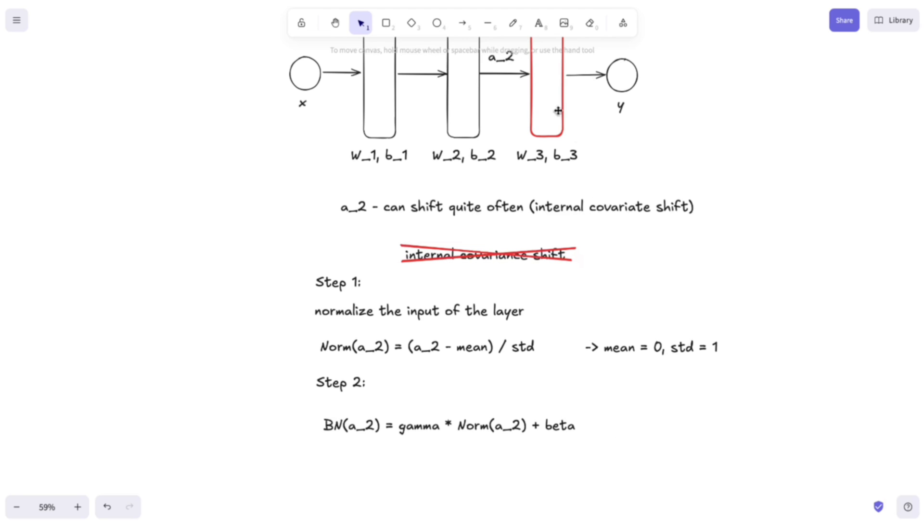And if we do that, then the input to this layer will have a mean equal to beta and a standard deviation equal to gamma. And here you have it, the two steps in the batch normalization layer together with the problem it tries to solve.